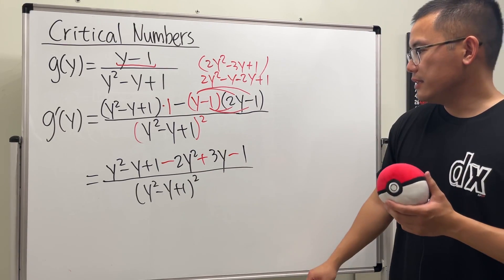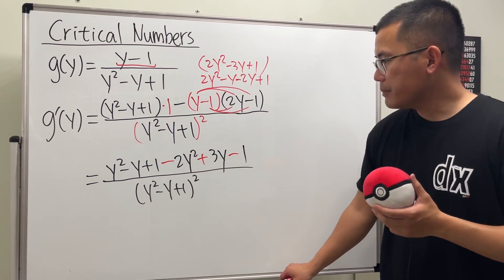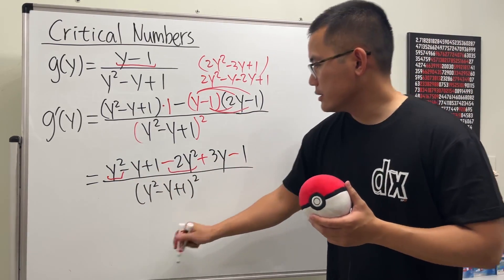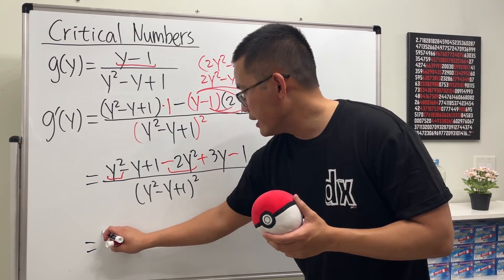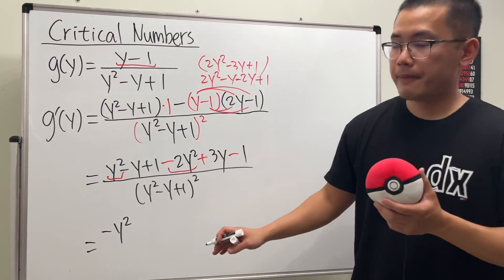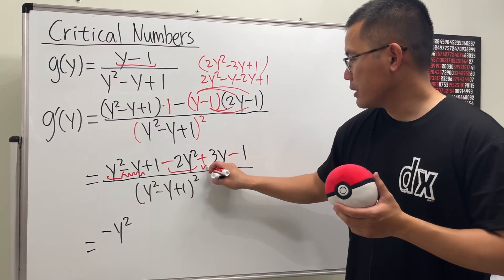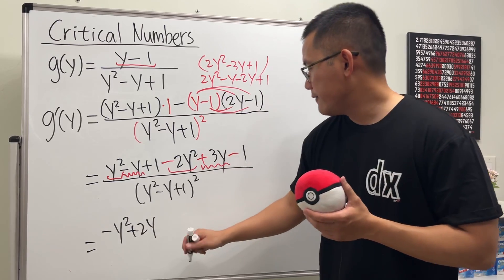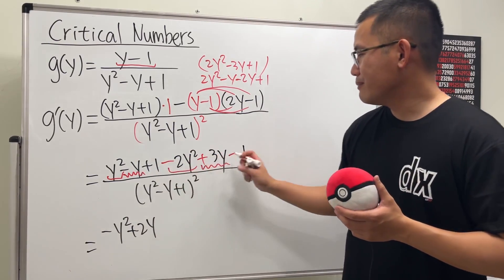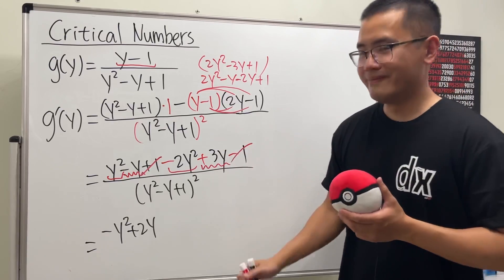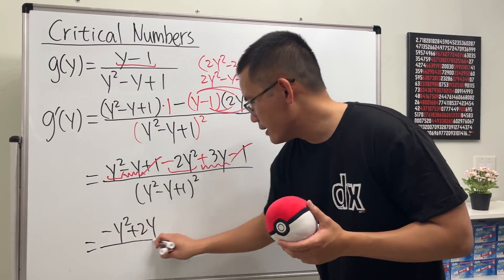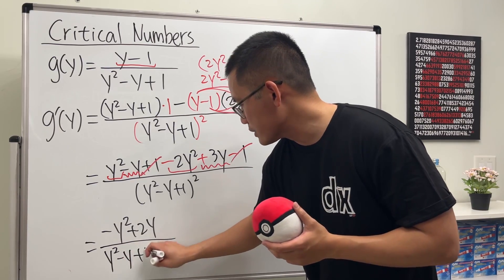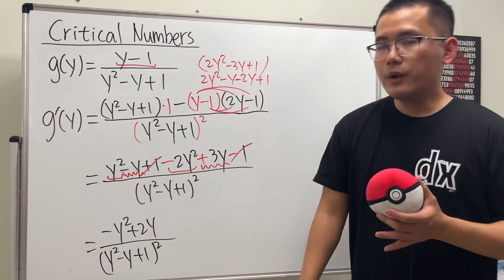Okay, let's see if there's anything to cancel. So for the top, we can combine this and that together. So we get negative y squared. And then next, minus y plus 3y, that will be plus 2y. And then finally, 1 minus 1, they cancel out. And then over the denominator, y squared minus y plus 1, and then square that.